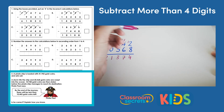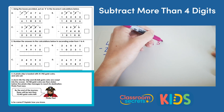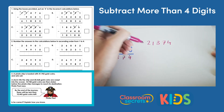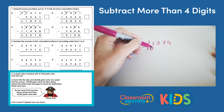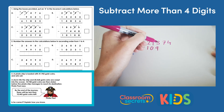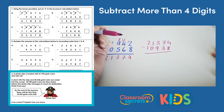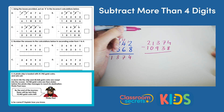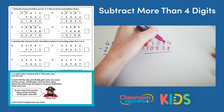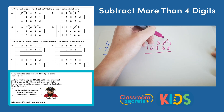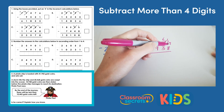So the next calculation we need to do is 21,374 subtract 10,938 — those are the ones that get taken. 4 subtract 8 — we can't do, but we can exchange, so we get 14 subtract 8, which leaves us with 6.